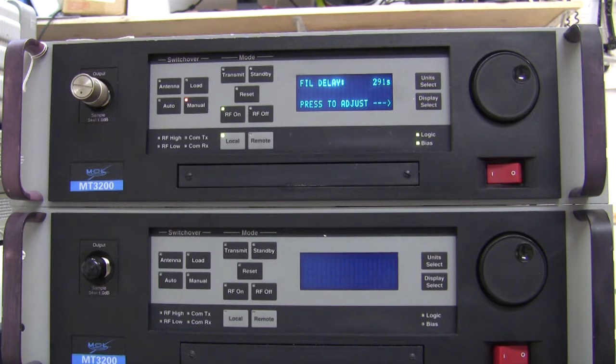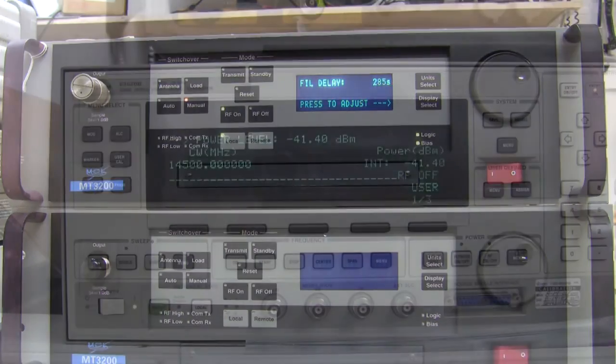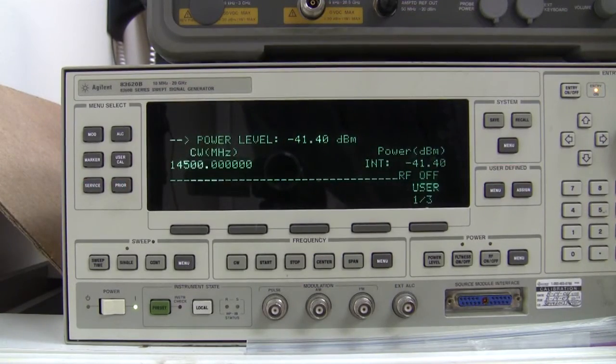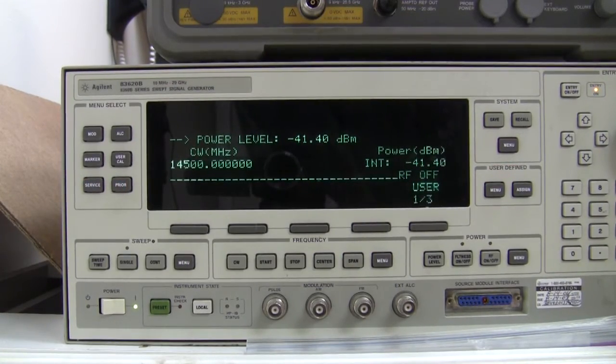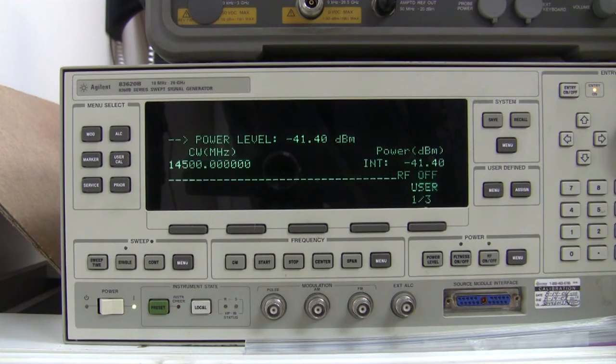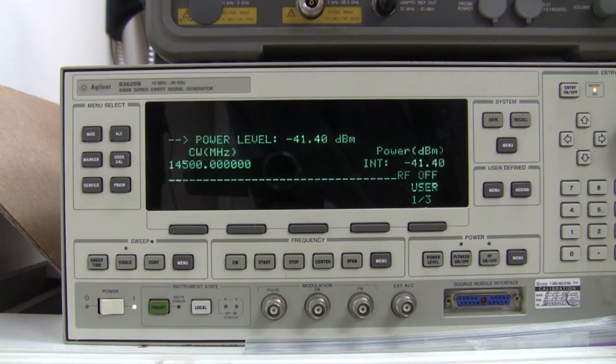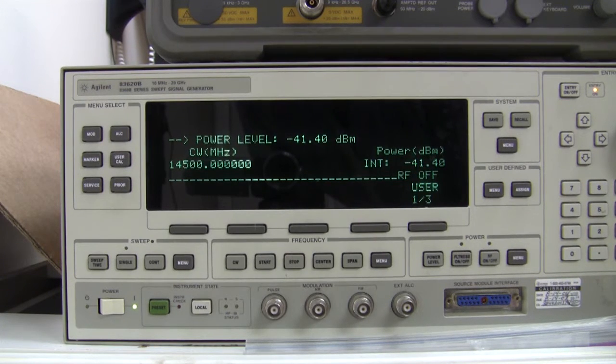The filament display shows 290 seconds. We'll get back to this as soon as it's ready to transmit. While I'm waiting for the amplifier to warm up, I've set the signal generator to 14,500 MHz. This is the top range of that particular amplifier. I've decreased the power on the output to negative 41, which is low and it's not likely to generate anything in the way of output at this stage.